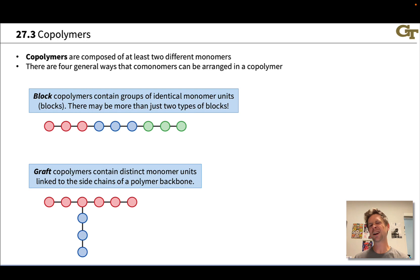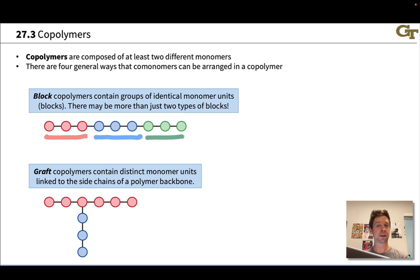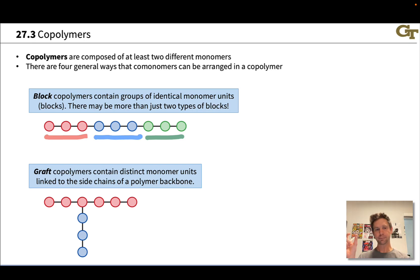Block copolymers are kind of like alternating copolymers, but contain groups of identical monomer units that vary a little bit in size. A block copolymer can contain more than just two types of monomers or two types of blocks. For example, in a hypothetical block copolymer, we might have a block of three red monomer units, three blue monomer units in the second block, and three green monomer units in the third block. These blocks don't necessarily need to be of equal size — we could have a block of 3, 10, 20, or 100 monomer units before the next monomer kind starts along the chain.